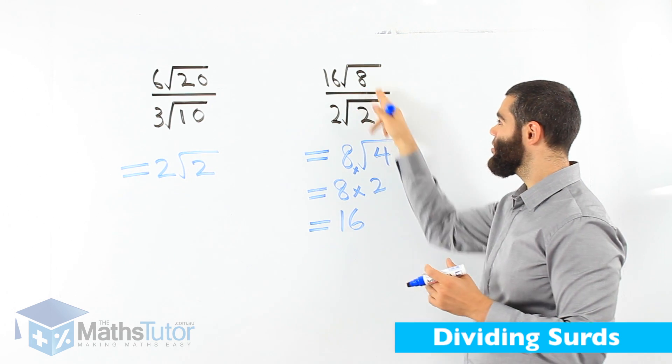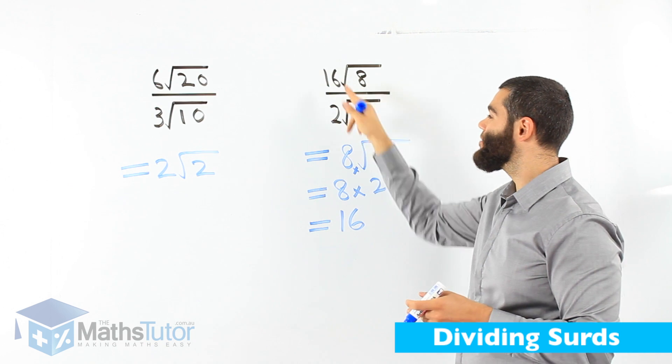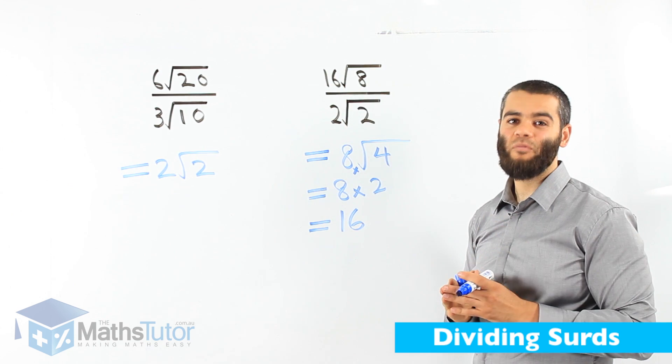This is how to divide. We divide the surds, and if there are whole numbers, we divide the whole numbers as well. It's again, very easy.